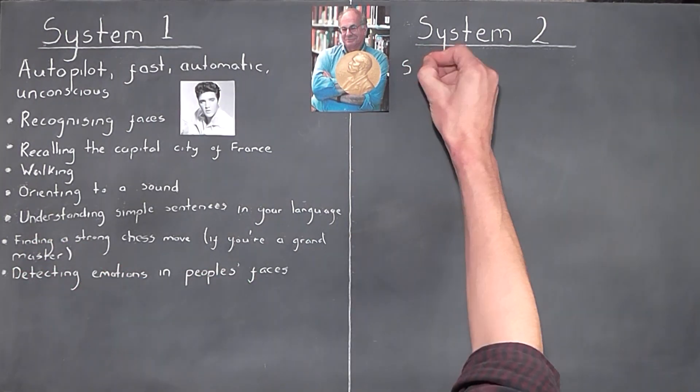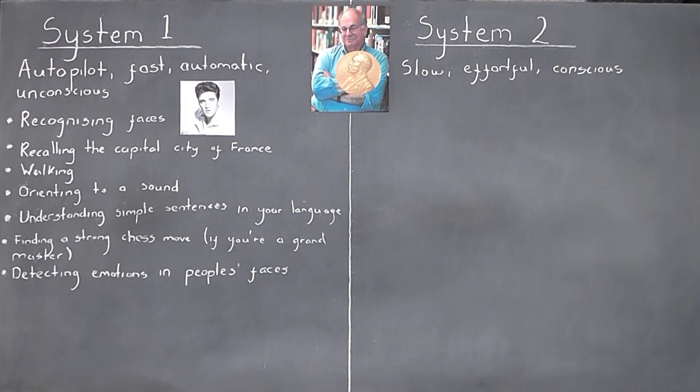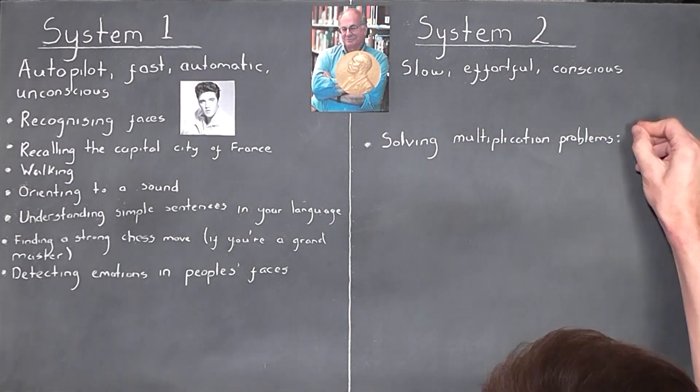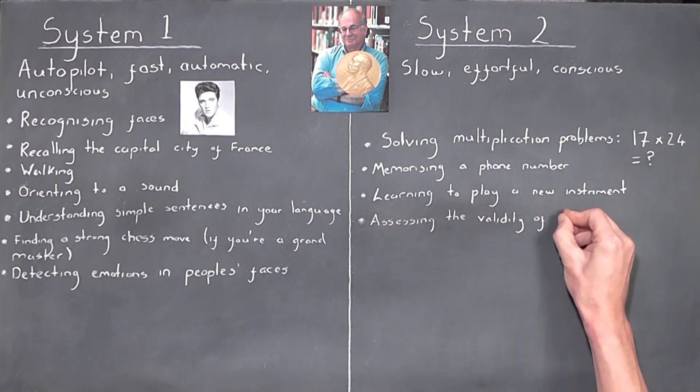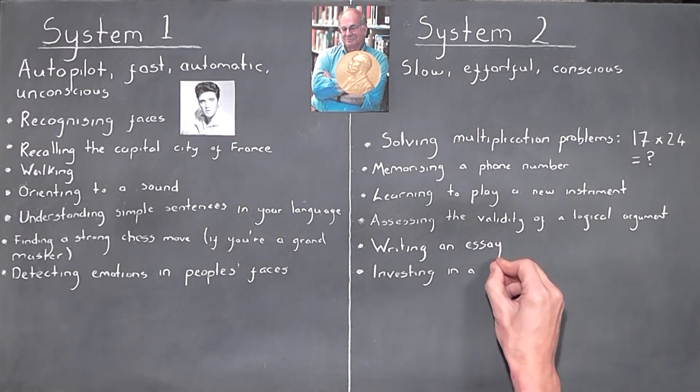On the other hand, System 2 is our slow, effortful and conscious system, which we use to complete tasks which require our focus and attention, such as solving multiplication problems, memorizing a phone number, and learning to play a new instrument. It's the system which skeptical Stan uses to guide his actions and opinions.